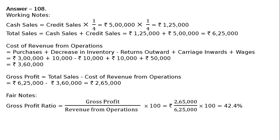Gross profit ratio equals gross profit divided by revenue from operations, multiplied by 100. That is rupees two lakh sixty-five thousand divided by rupees six lakh twenty-five thousand, multiplied by 100, which gives 42.4 percent. This is the final answer.